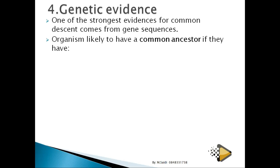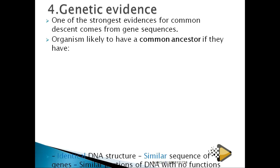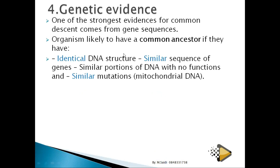Organisms likely share a common ancestor if they have identical DNA structure. For example, chimpanzees share about 98% of their DNA with humans, meaning we are closely related. Similar gene sequences and similar non-functional portions of DNA — called nonsense DNA — also support common descent.